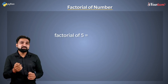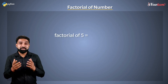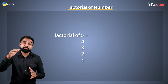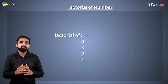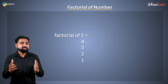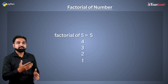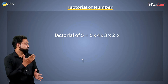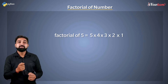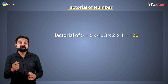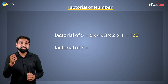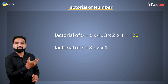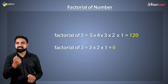Factorial is nothing but the multiplication of an integer and all the integers below it. 5 factorial is 5 multiplied by 4 multiplied by 3, then 2 and then 1, that is 120. 3 factorial is 3 multiplied by 2 and 1, that is 6.